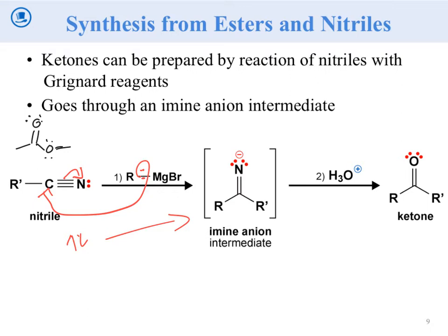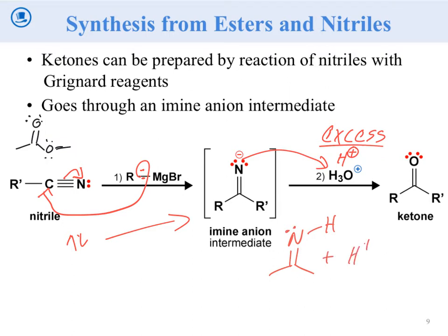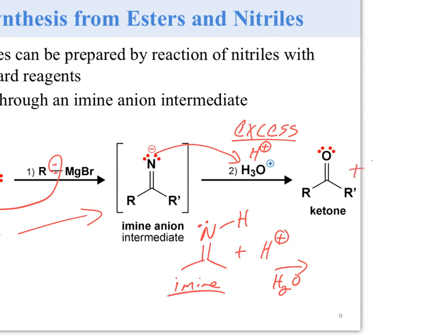Protonation is going to give you something — if this is H+, you've seen this before. What's going to happen is we have an excess, and now we're doing something you've done before. If this is an imine plus H+ with water as solvent — everybody recognize this? This is an imine. What happens is this becomes NH3, because there are no carbons on it. We keep adding H+, replace the nitrogen with water, and make a ketone. So the product is a ketone, and the nitrogen we added leaves as NH3, which is a gas.